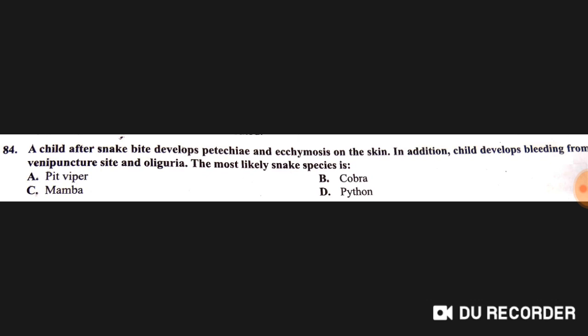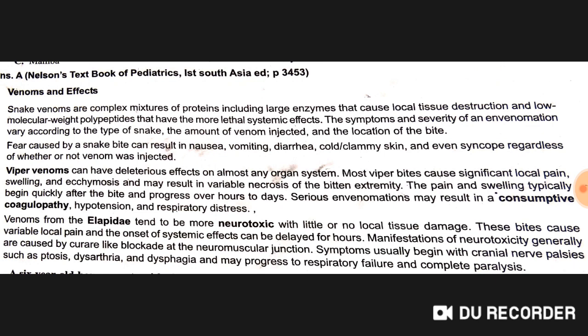A child after a snake bite develops petechiae and ecchymosis on the skin, in addition to bleeding from the venipuncture site and oliguria. The most likely snake species is pit viper. Viper venoms are a complex mixture of proteins including large enzymes that cause local tissue destruction. Serious envenomations may result in consumptive coagulopathy, hypotension, and respiratory distress.